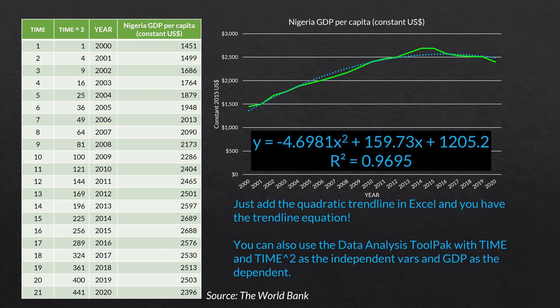Luckily, Excel makes this very easy. We just graph the data, add the quadratic trend line, and it gives us our equation and R-squared. Now, while that is the super easy method, you could also use the data analysis tool pack with time and time squared as the independent variables and GDP as the dependent, and run a regular multiple regression. It will give you the same values for the coefficients and the R-squared.